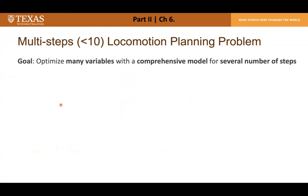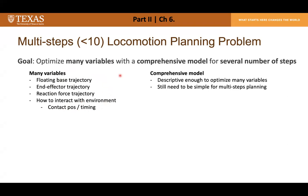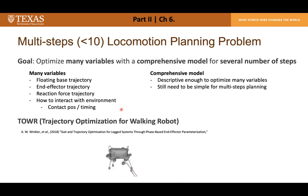Chapter 6 aims to solve a multi-step locomotion planning problem that optimizes many decision variables automatically with a comprehensive model over several steps. Whereas the one-step planner only decided contact position with other variables pre-specified by humans, here all variables are decided by the optimization. The dynamics model must be descriptive enough to optimize these variables but still simple enough for multi-step planning. The LIP model is insufficient to represent angular momentum, but the full dynamics model is too complex. The state-of-the-art TOWR framework uses a single rigid body dynamics model and phase-based parameterization for contact constraints, making it computationally efficient.